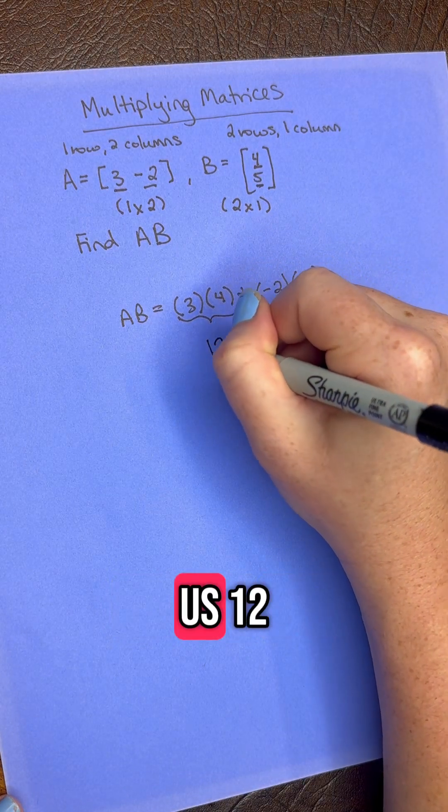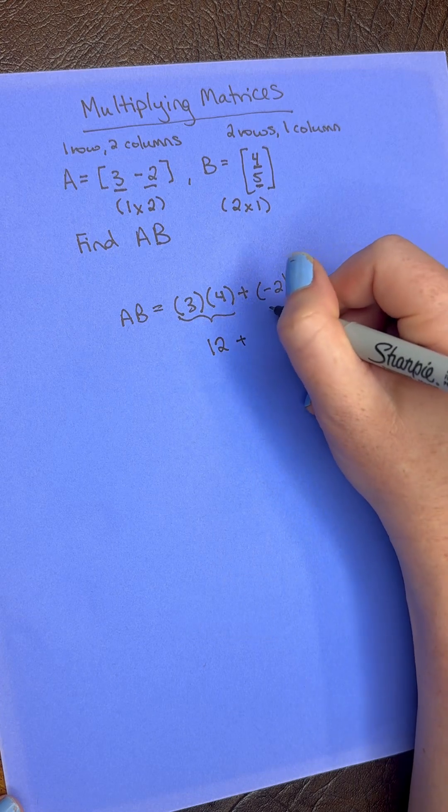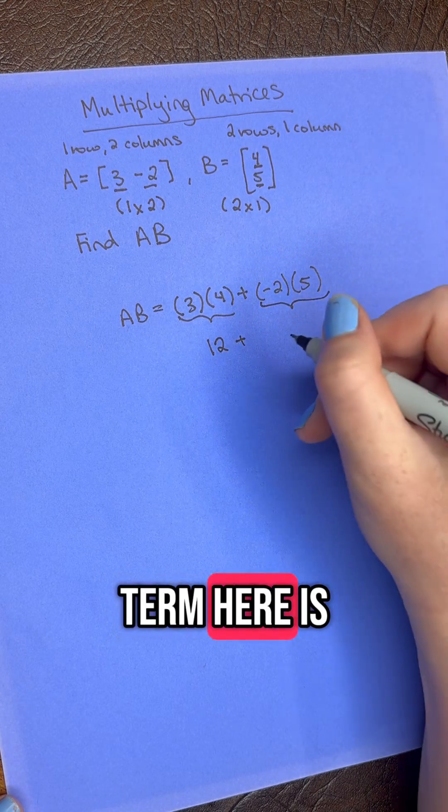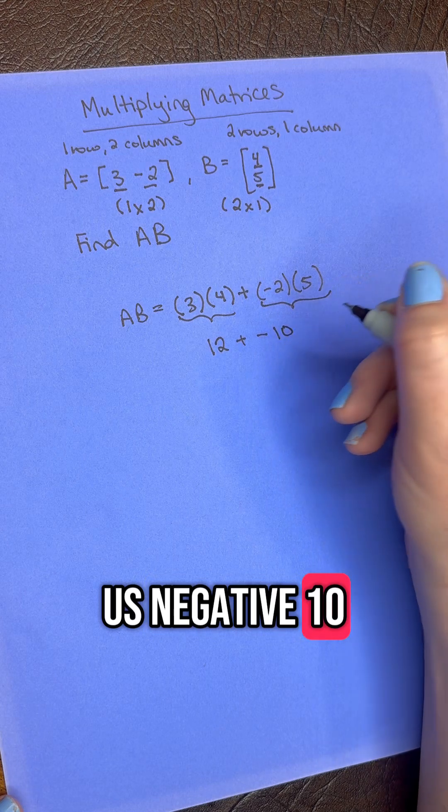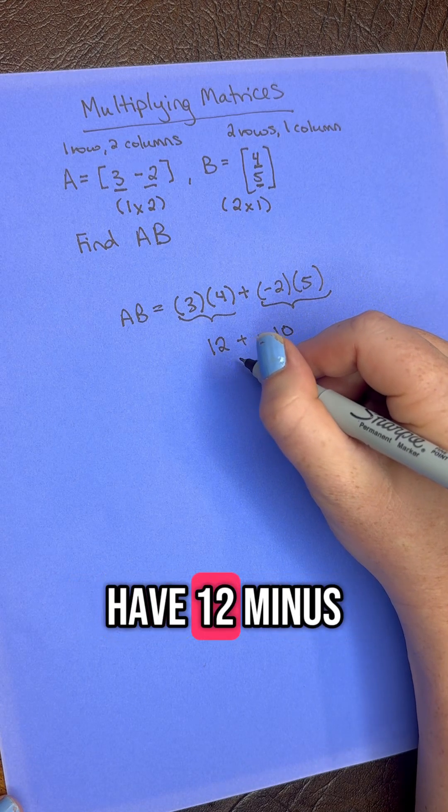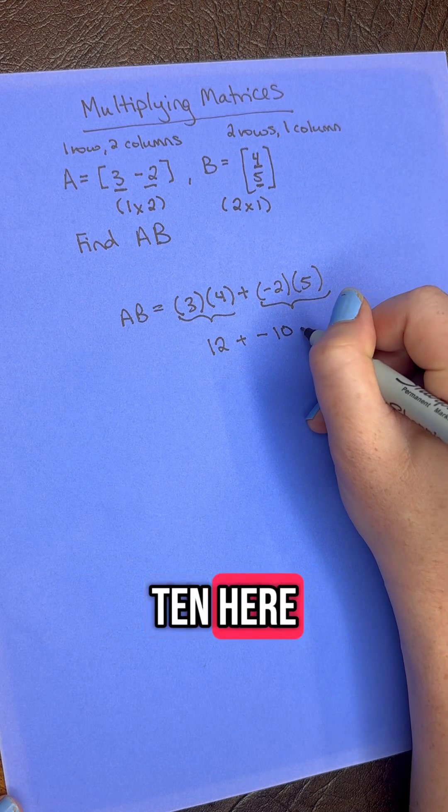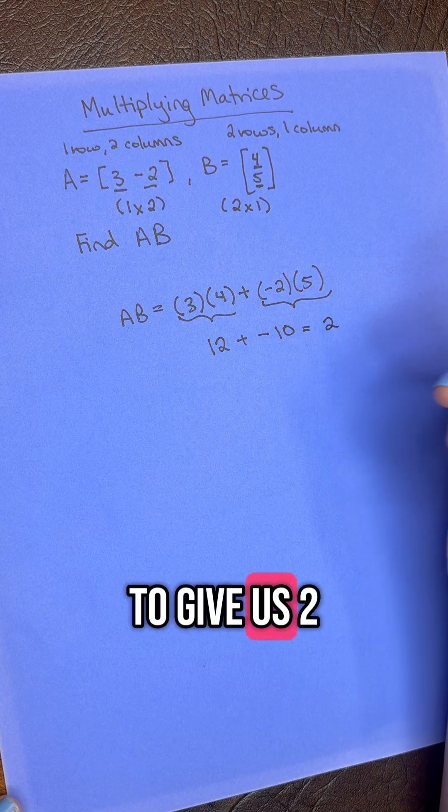So this is going to give us 12. And then this term here is going to give us negative 10. So we essentially have 12 minus 10 here, which is going to give us 2.